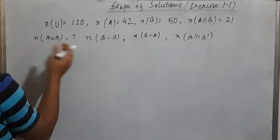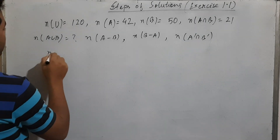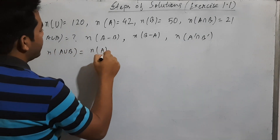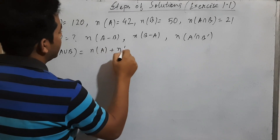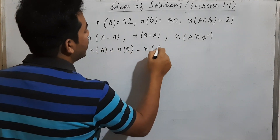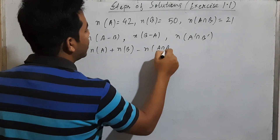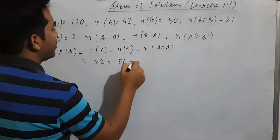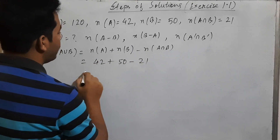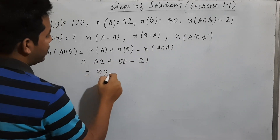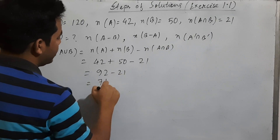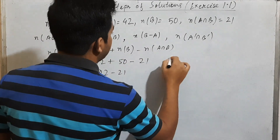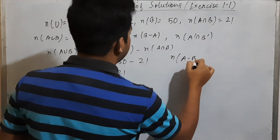You need to use the formula for this. The union formula: n(A union B) equals n(A) plus n(B) minus n(A intersection B). So: 42 plus 50 minus 21 equals 71. The number of A union B is 71.